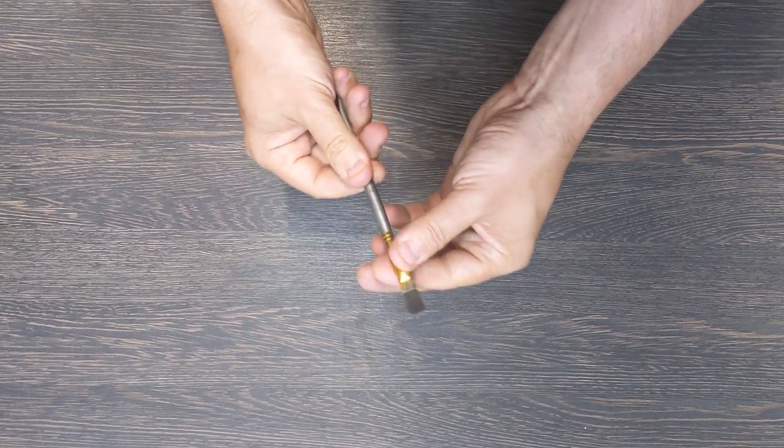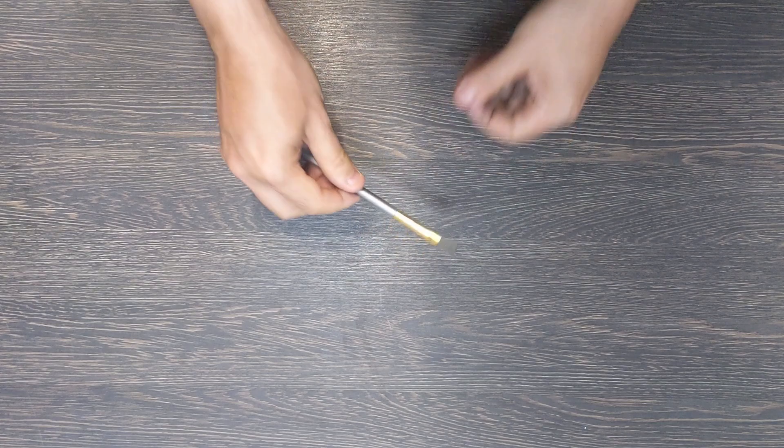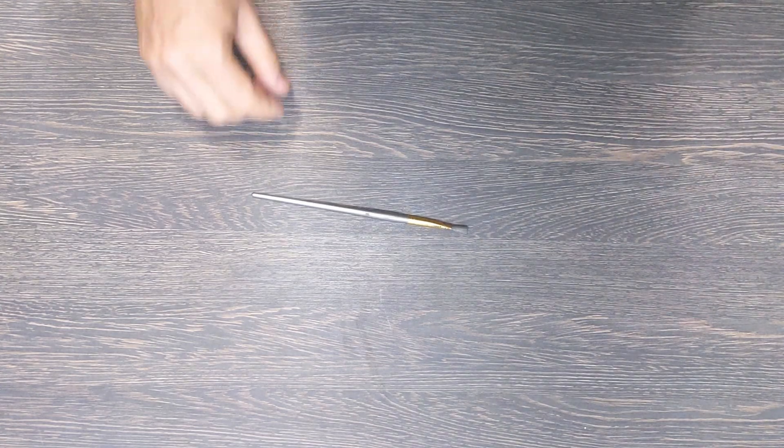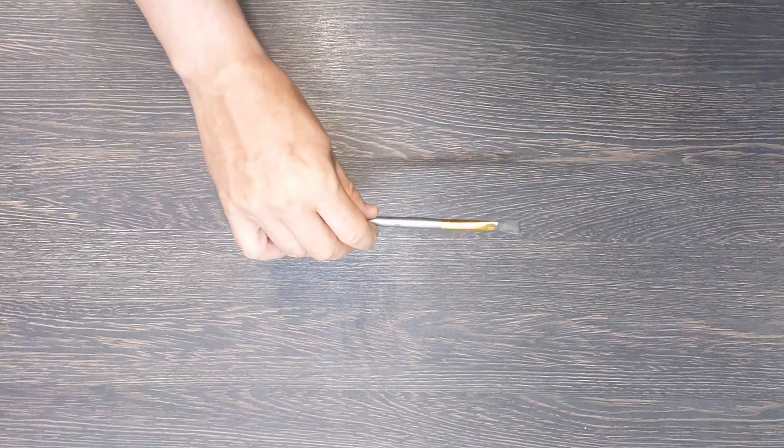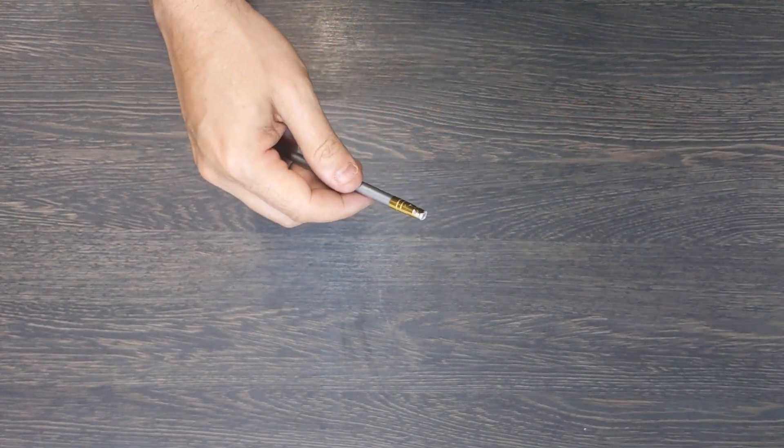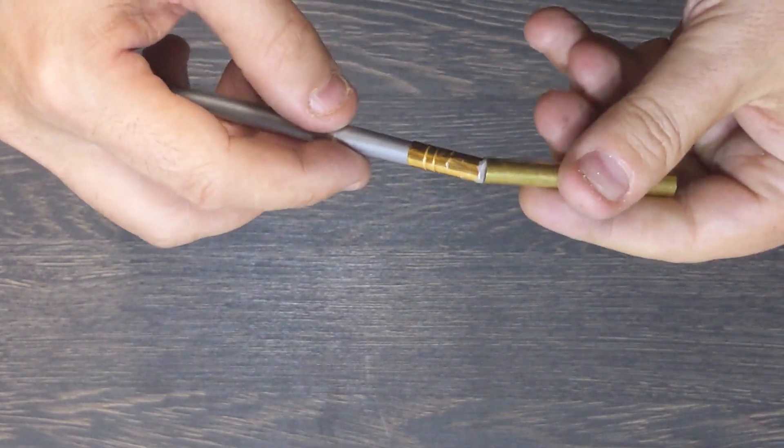So first things first, the paper brush obviously you don't need, so I'm going to just chop the end off that. I just use a hacksaw and just got rid of it. I gave it a quick sand on the end to get rid of the rough edges and to make sure that the brass tube fitted.